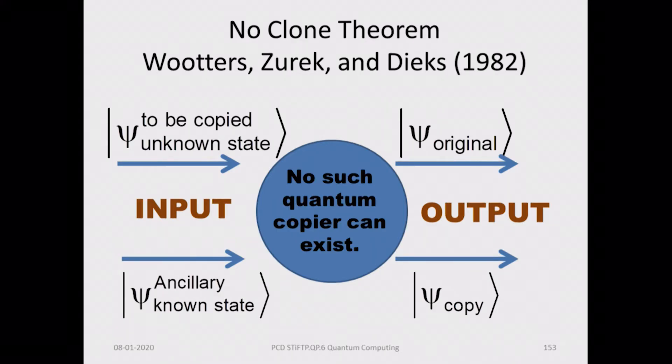When you are processing qubits and putting them through some gates, the question is whether you can generate a quantum copying machine that will give you an exact copy of the original qubit. Such a quantum copier does not and cannot exist, which is a negative result but a very important one in quantum computing and quantum information science.